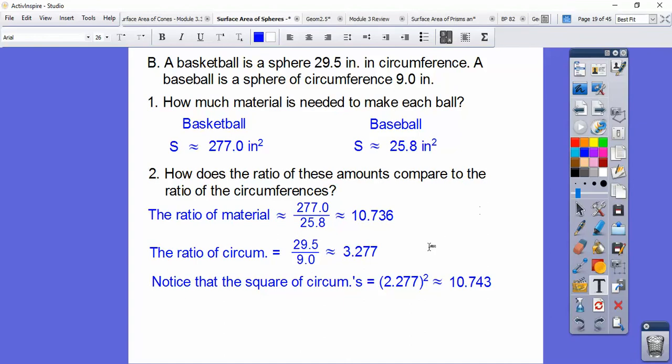So 3.277 squared ends up being about 10.743. Look at the relationship of those. They're really close to each other right there. Can you see how close those numbers are? So here's our answer.